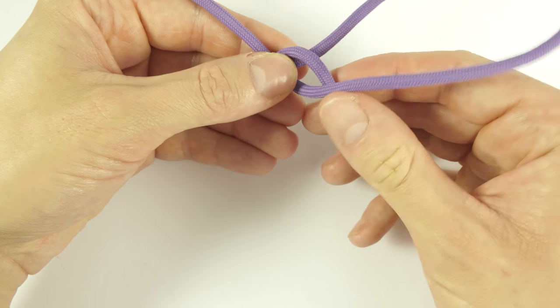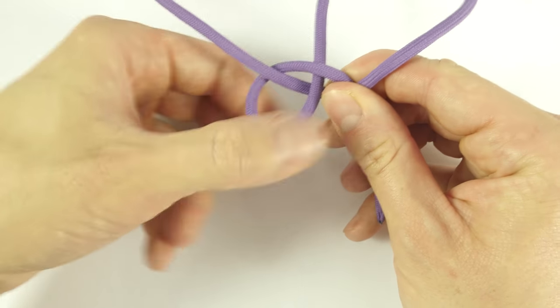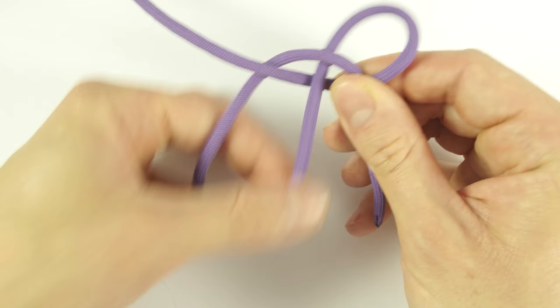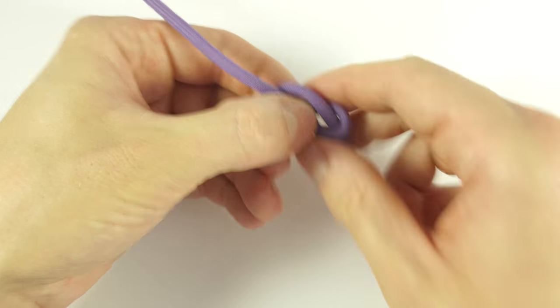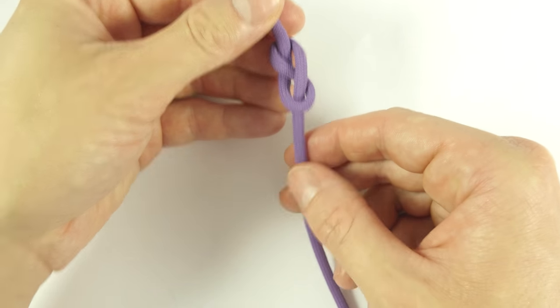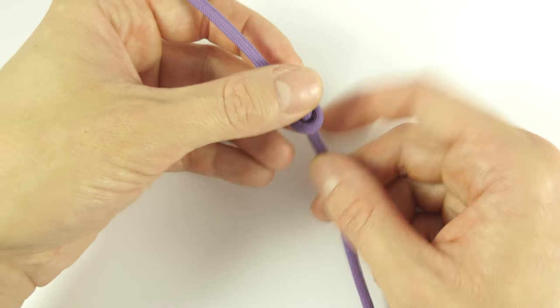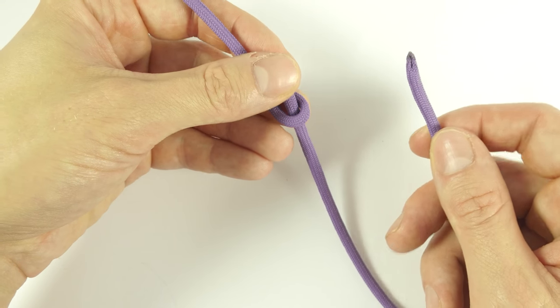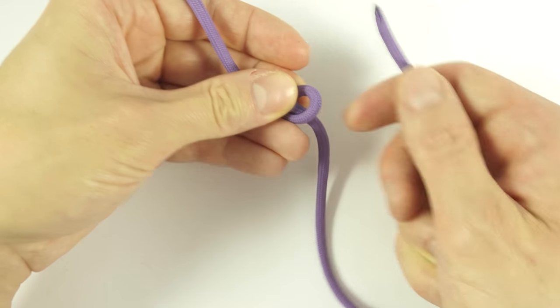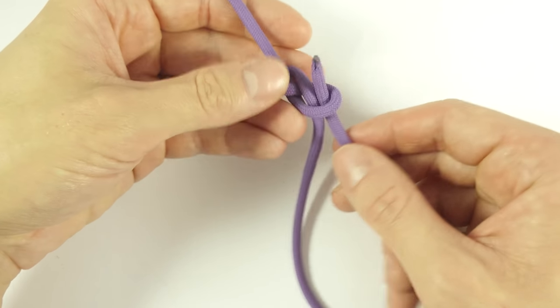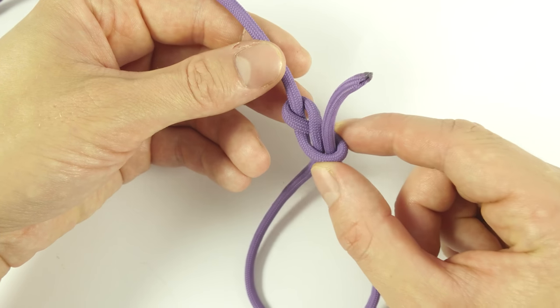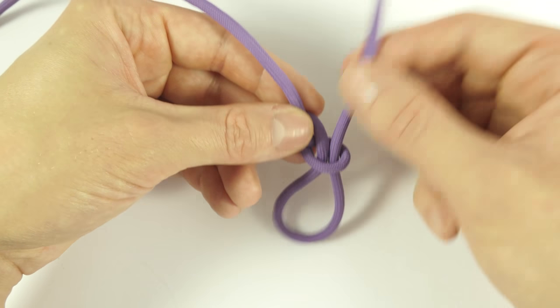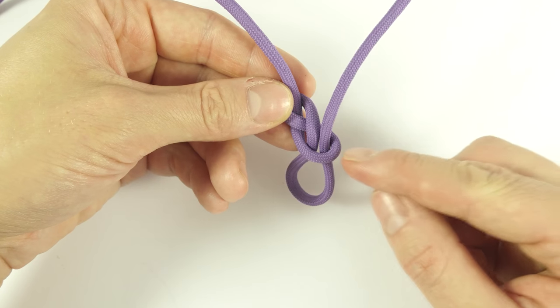Let's say like this, and then we work it in into the working end. Then we take our working end and we place it under and through the bottom loop of the figure 8 knot, basically slipping the figure 8.